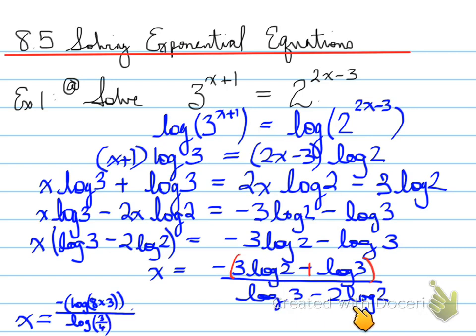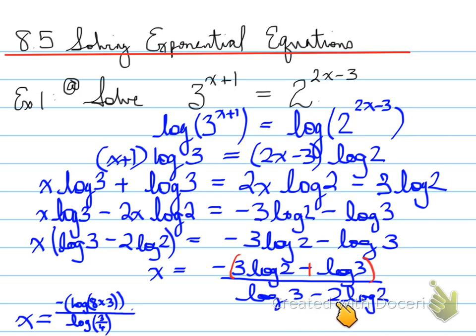In the denominator, I have log of 3 over 4. The reason is that the 2 becomes an exponent — 2 squared equals 4 — and then log 3 minus log 4, using the quotient law, gives log(3/4). Finally, we simplify and plug it into the calculator. You should get the exact answer first, then the approximate answer, rounding to four decimal places unless otherwise stated.